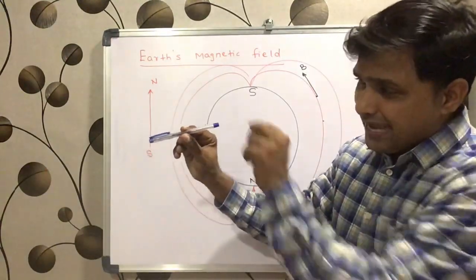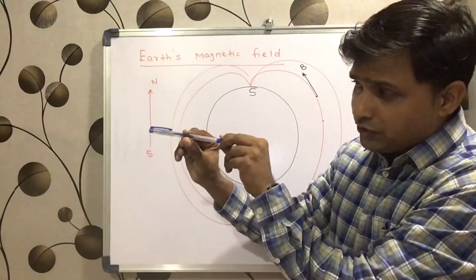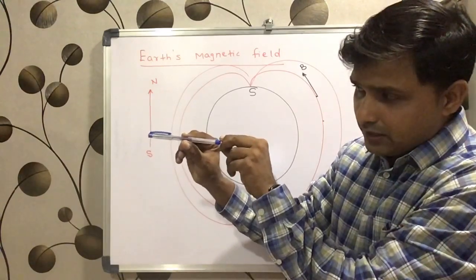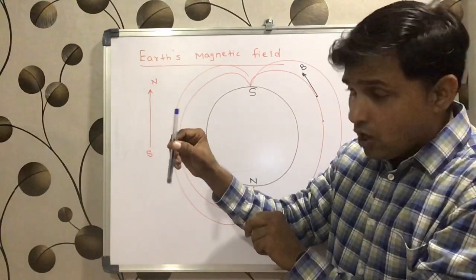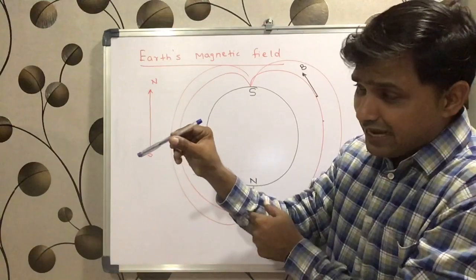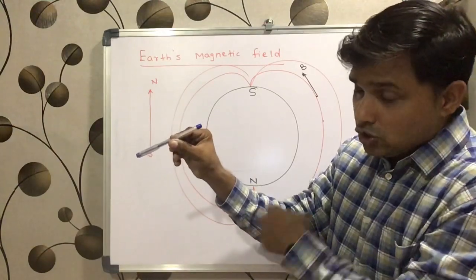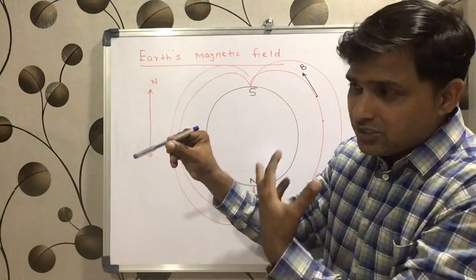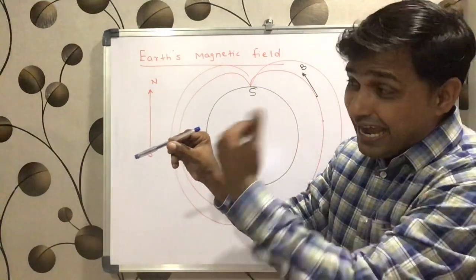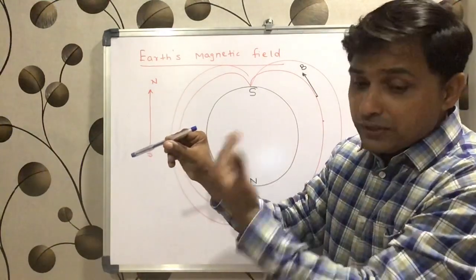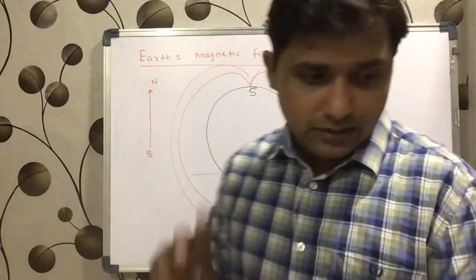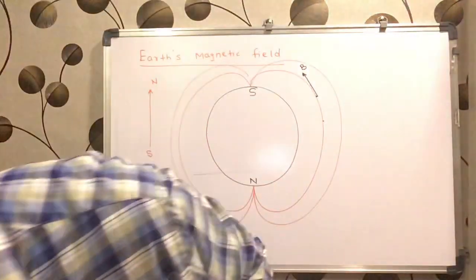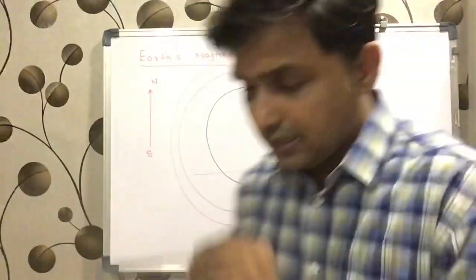The Earth's magnetic field is not exactly horizontal and not exactly vertical — it is slightly inclined. So we say that Earth's magnetic field is inclined with respect to the horizontal. I will try to demonstrate that.